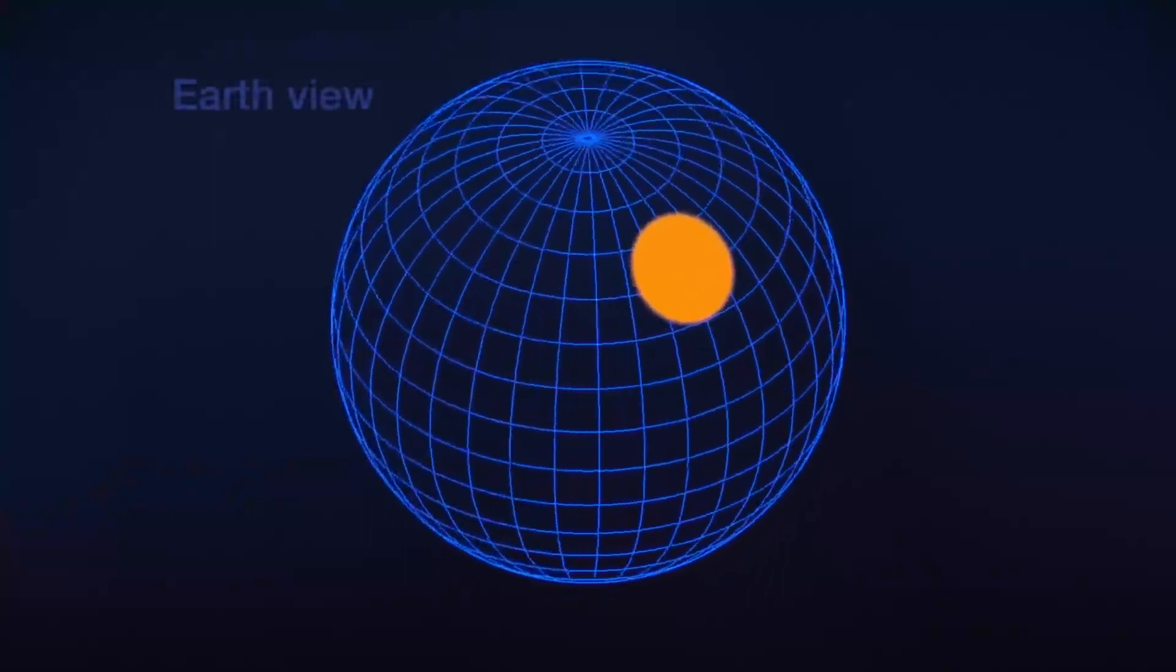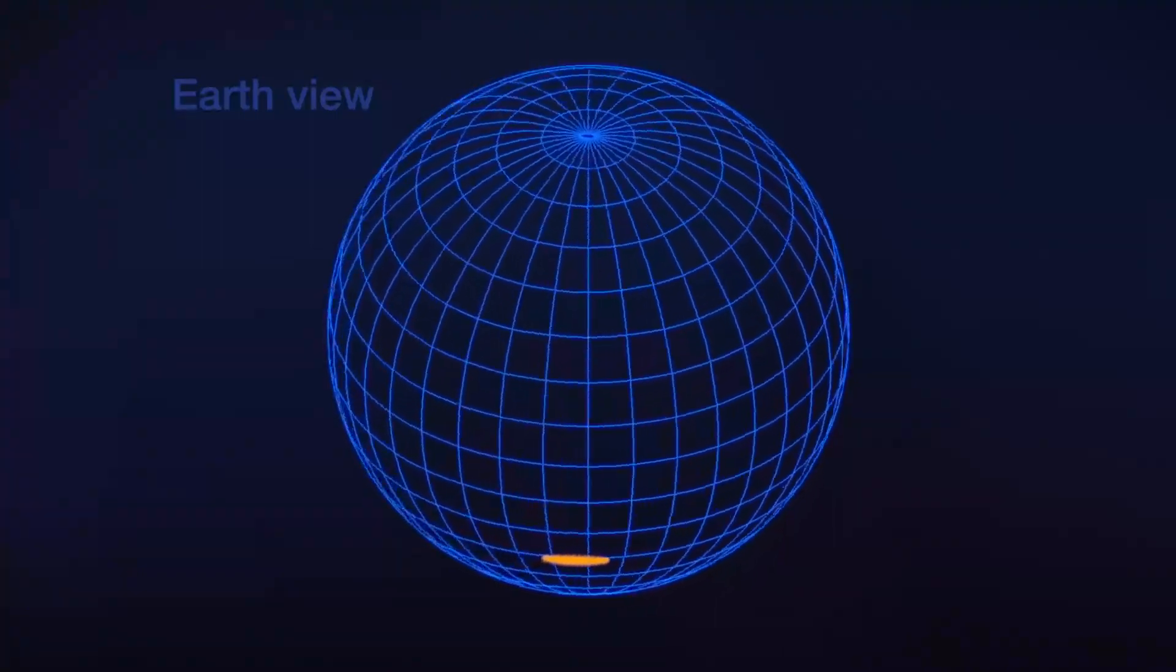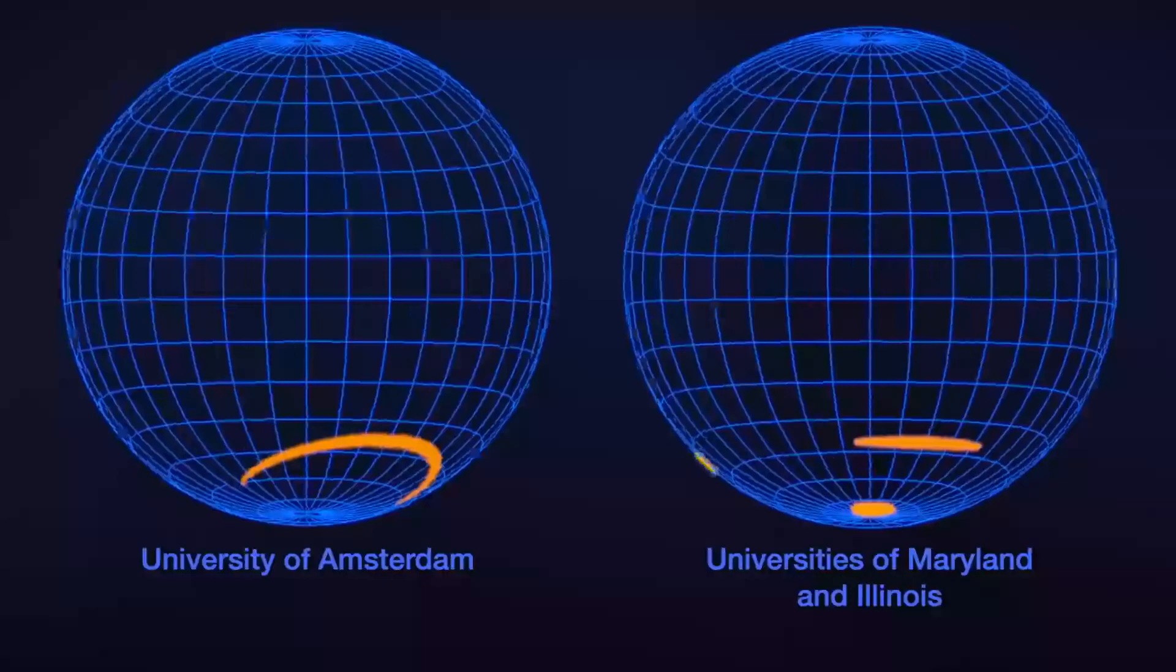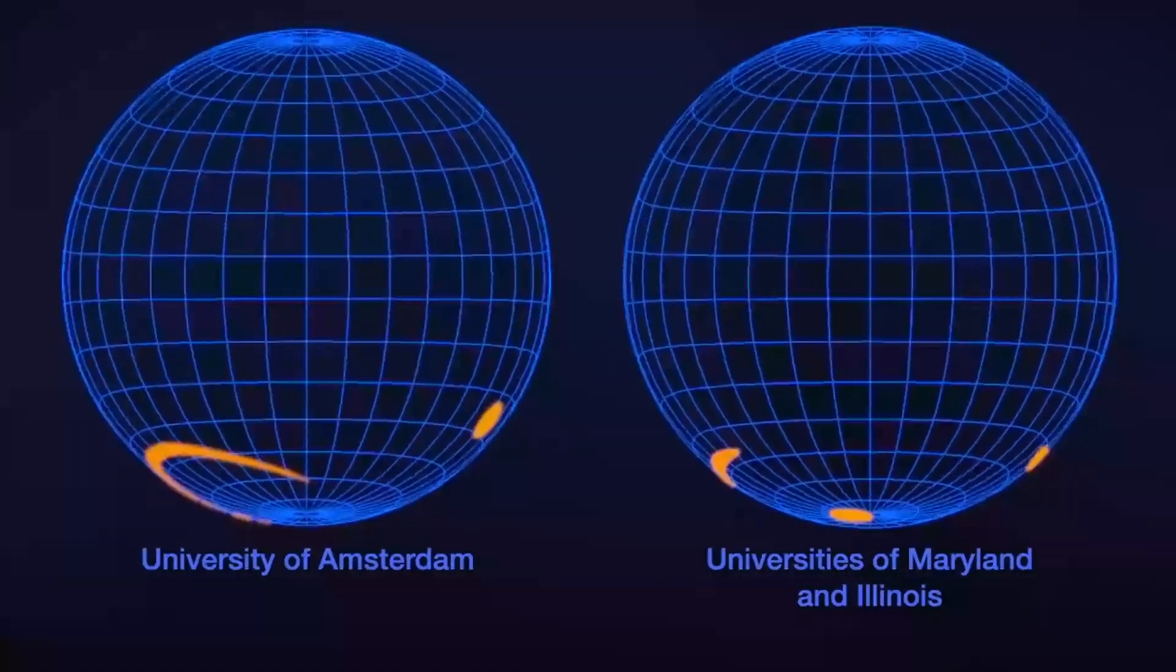From Earth, we look down onto J0030's northern hemisphere. Both teams say there are no spots there at all. Contrary to the simple magnetic dipole model, all the spots appear in the southern hemisphere, and are not necessarily in shapes we might expect.